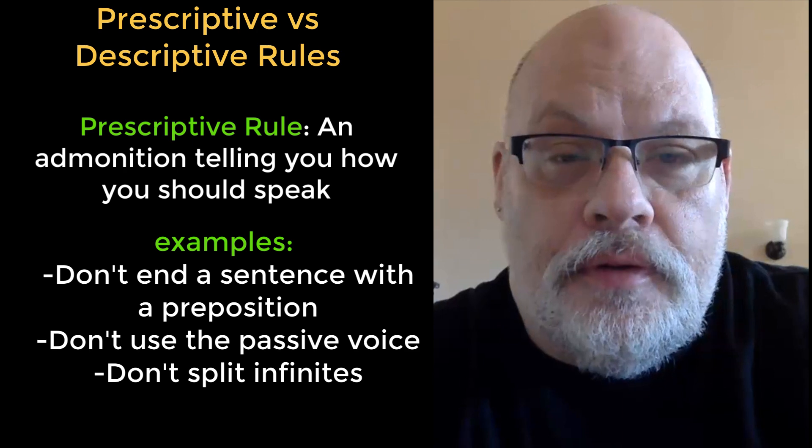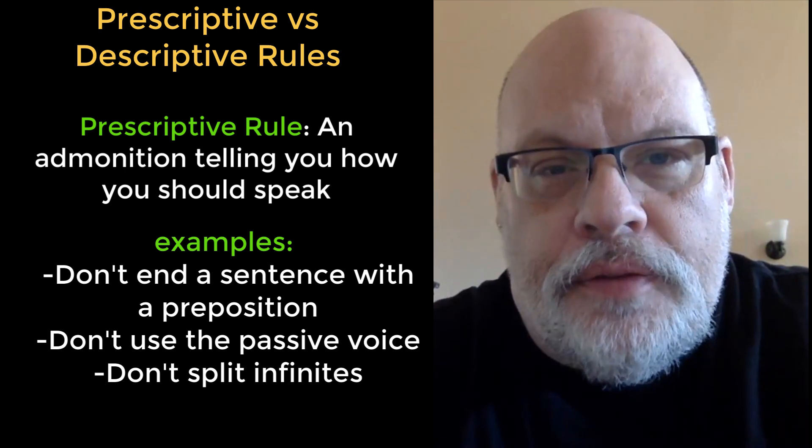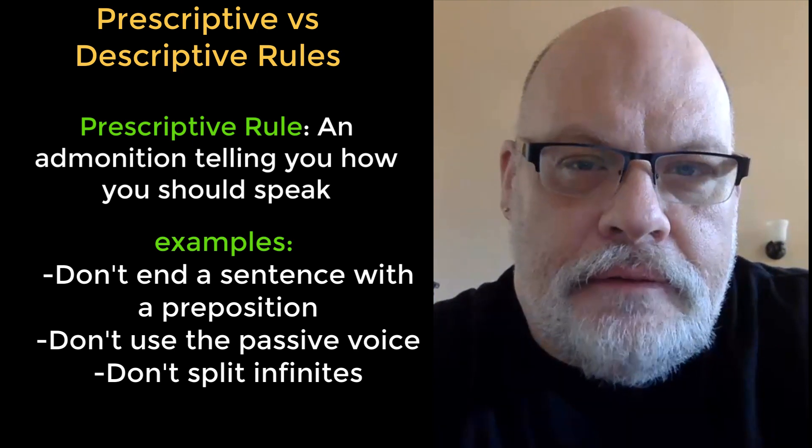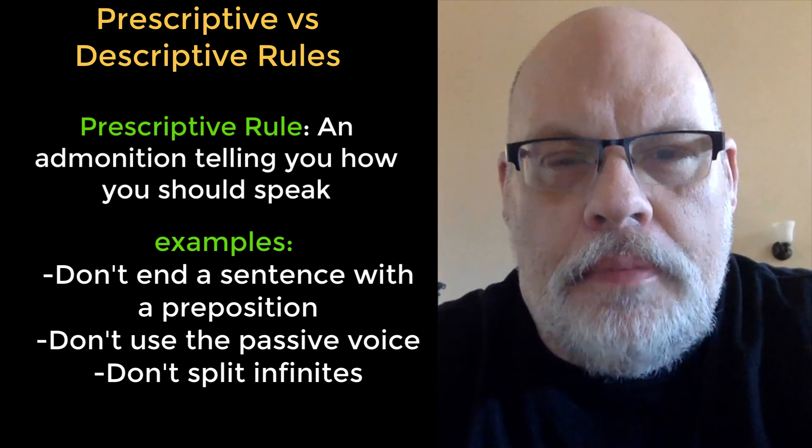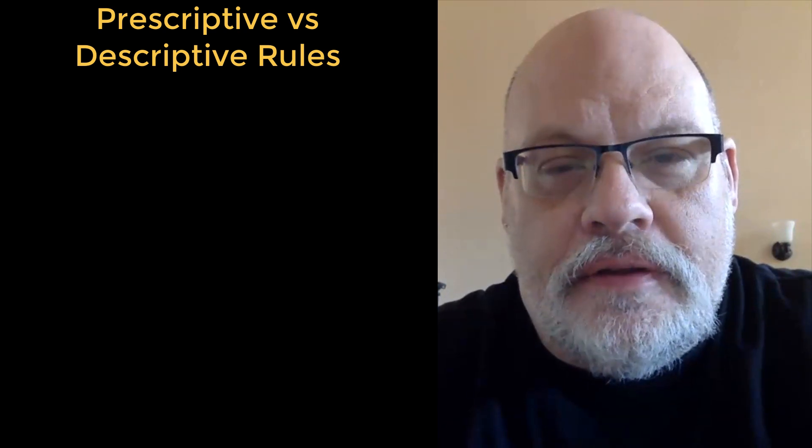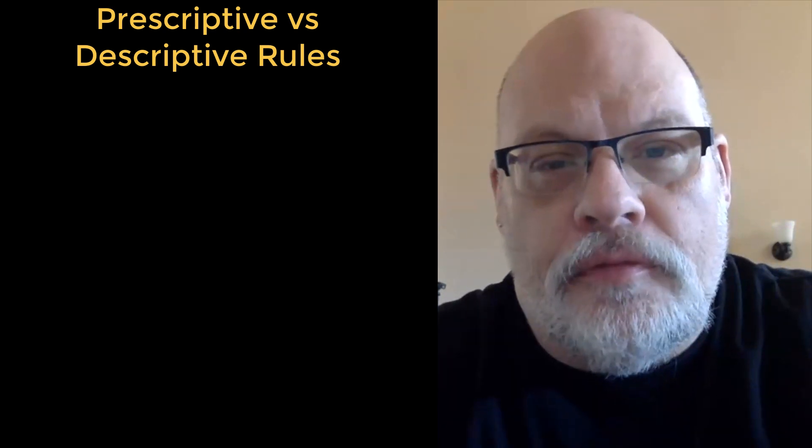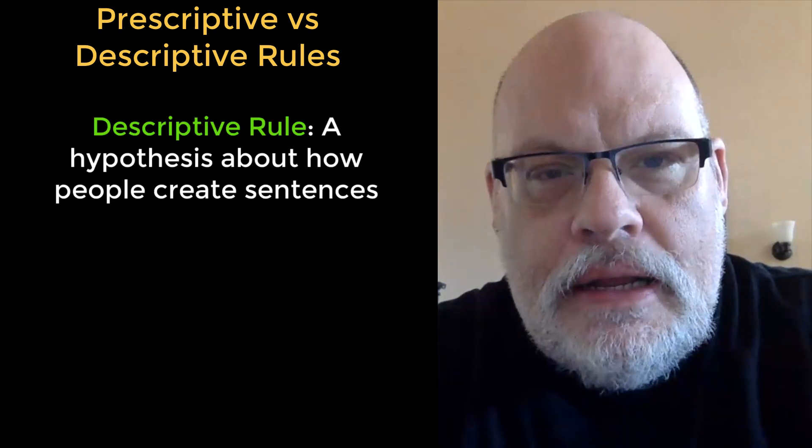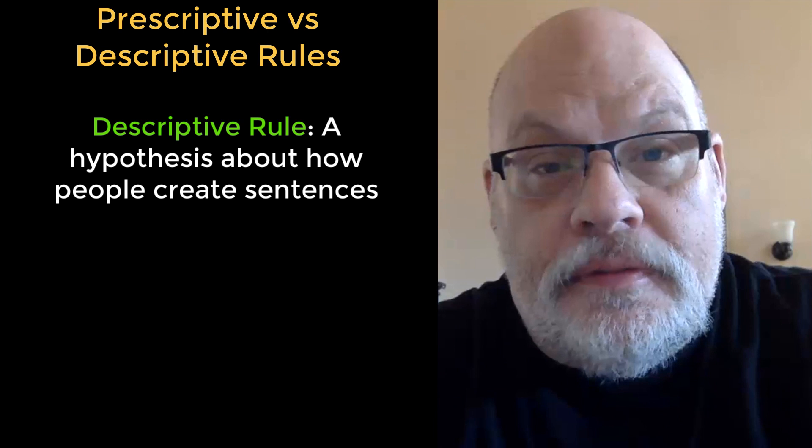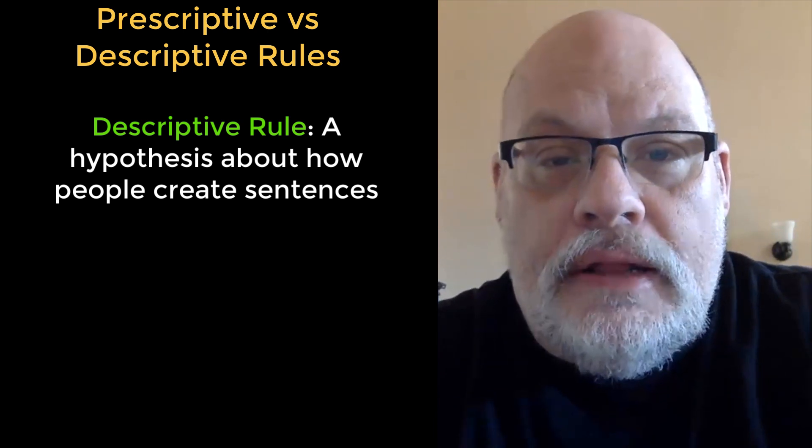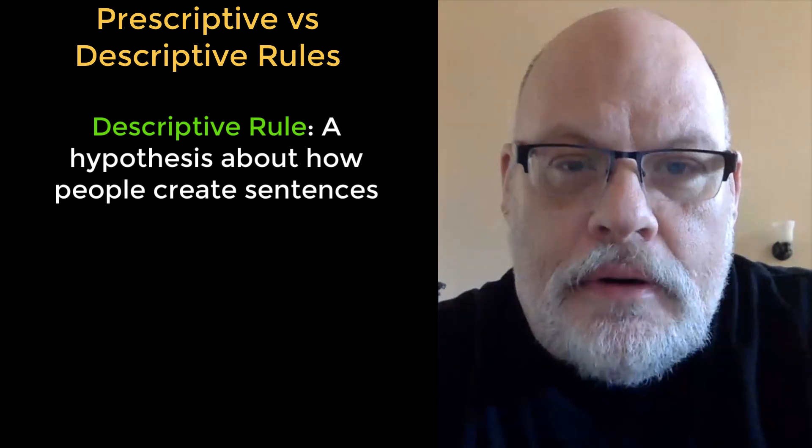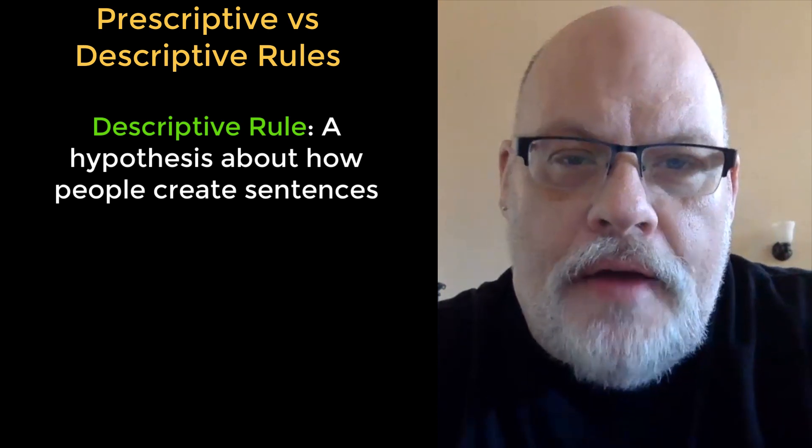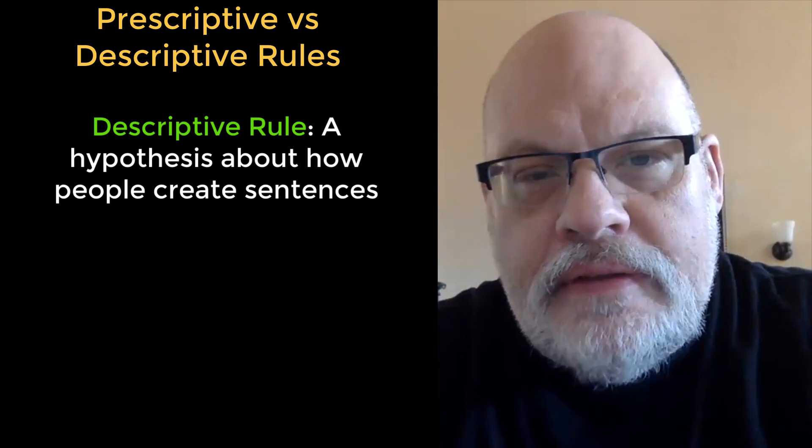Some very common prescriptive rules are don't end a sentence with a preposition, or avoid the passive voice. But prescriptive grammars are not what syntacticians mean when they use the terms rules and grammar. Scientists don't prescribe how things happen. They describe them and try to explain them. So when a syntactician talks about a grammar or talks about a rule, they're describing their hypothesis about the patterns they see in sentences.